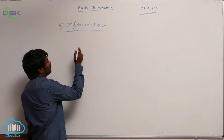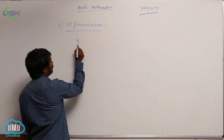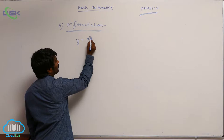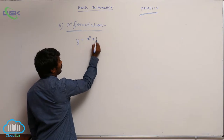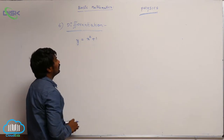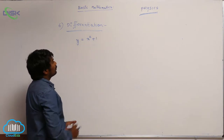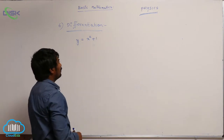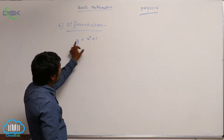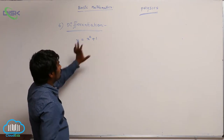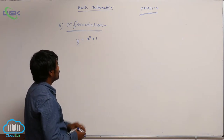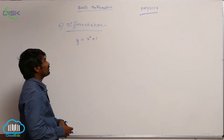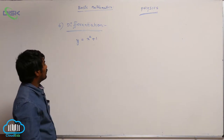Let us take y as a function of x, with the equation x squared plus 1. Here, x is called the independent variable, and y depends on x values — that is why y is called the dependent variable.